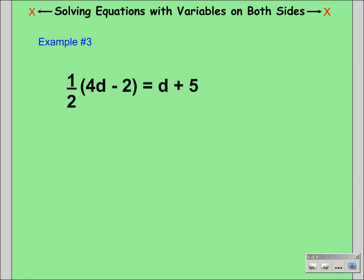Our next example involves a little bit of the distributive property. Before we begin solving and moving our variables and constants around, we want to take our 1 half and distribute it into what is inside our parenthesis: 4d minus 2.